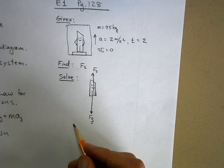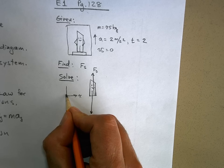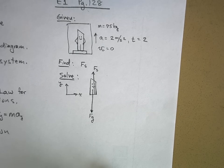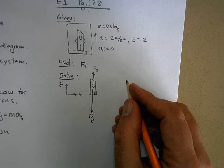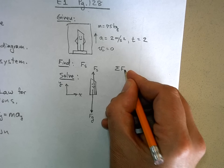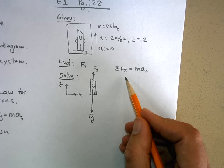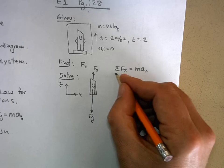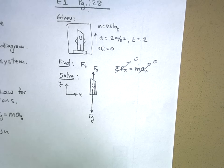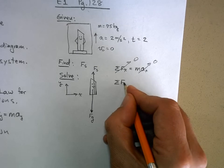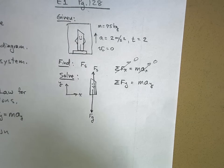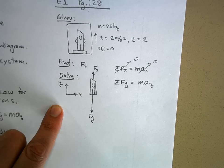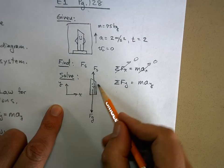Step three: we set up our axis — x to the right, y upward. Right now this is just a formality, but later it becomes very important. Step four: use Newton's second law in the x and y directions. If I sum the forces in the x direction equals ma in the x direction — what are the forces in the x direction? There aren't any. So this equals zero; there's no acceleration in the x direction and nothing's going on in x.